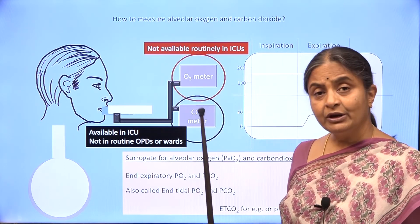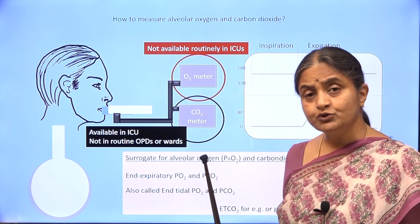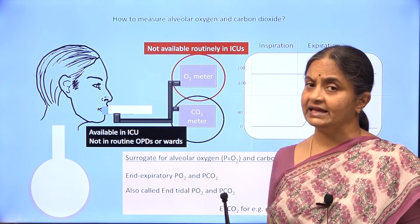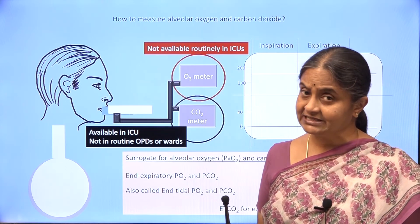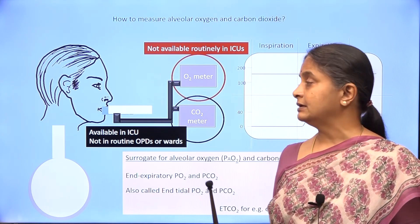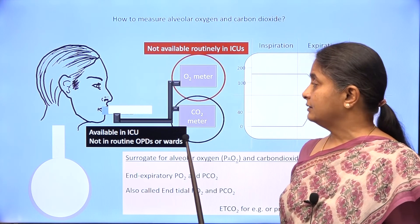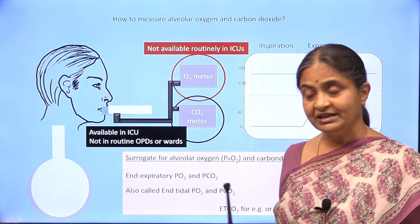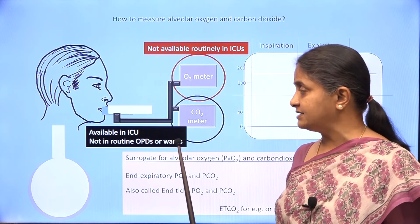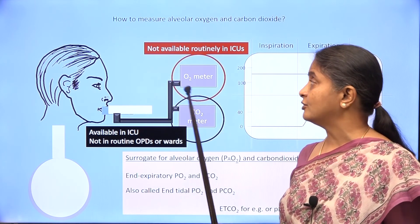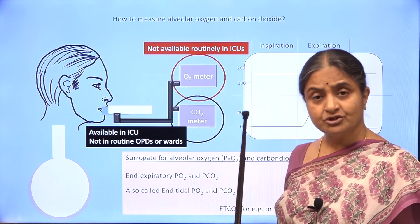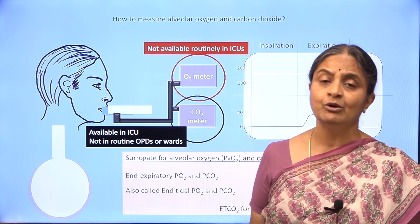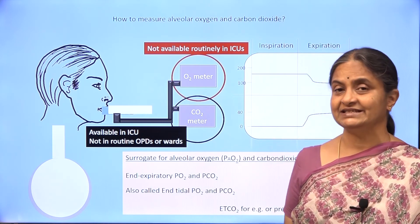So though alveolar gases are useful lung function tests and the method by which you can measure alveolar gases is fairly simple and non-invasive, those machines are not routinely available in the wards and OPD. Capnometers are available in ICUs, and oxygen meters are not even available in the clinical setting — only in the research setting.